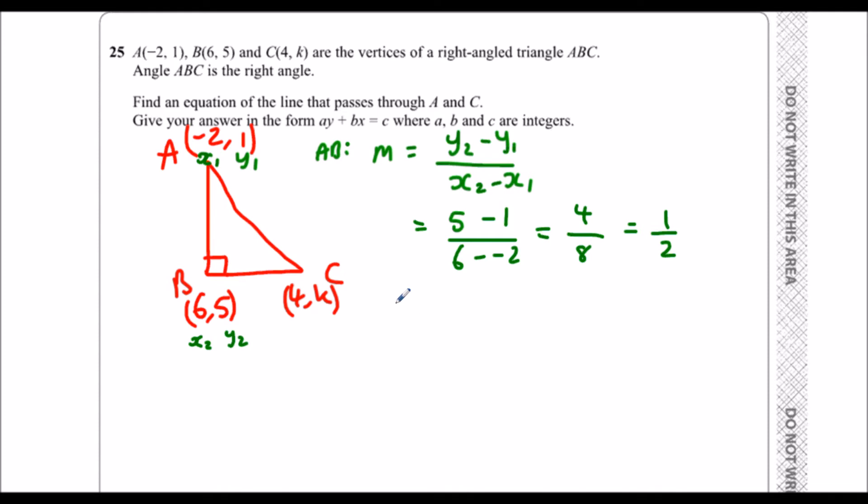So that means the gradient of BC, put BC here, the gradient is perpendicular. So it's a negative reciprocal. So that means it's negative, and it's flipped. So reciprocal of 1 over 2 is 2 over 1. So this gradient multiplied by this gradient has to give us a minus 1. So the gradient of BC is minus 2.